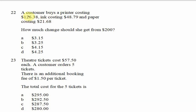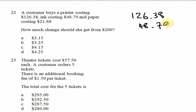Now looking at question 22: a customer buys a printer costing $126.38, ink costing $48.79, and paper costing $21.68. How much change should she get from $200? Before we can determine the change we must first find the overall cost of the items purchased, so we want to add up the cost of each item.